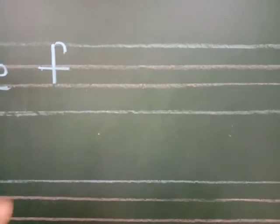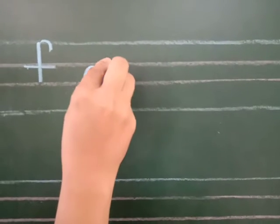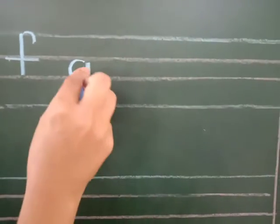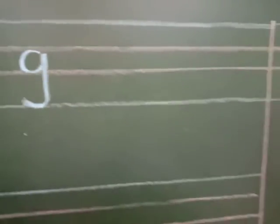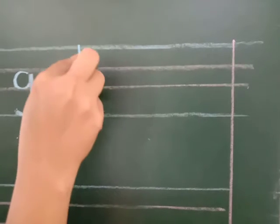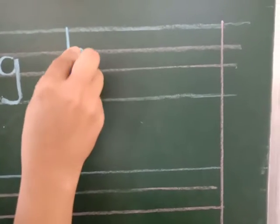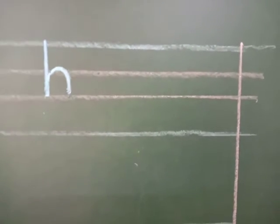Small g — now small g will be in the downside three lines. Circle, standing line, and a curve. Small g. Small h: standing line, and in this way you will draw the half circle or the curve line.